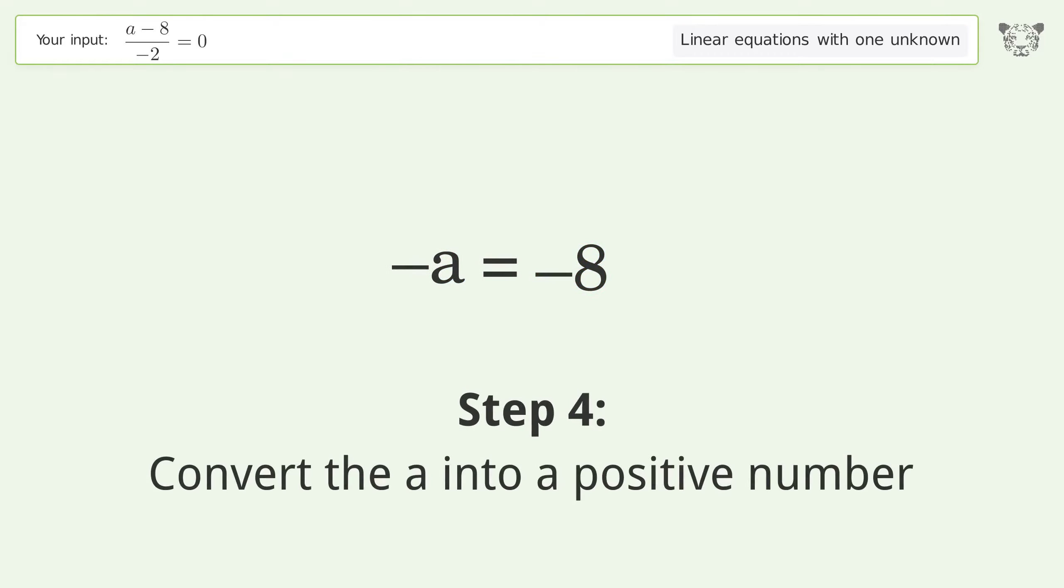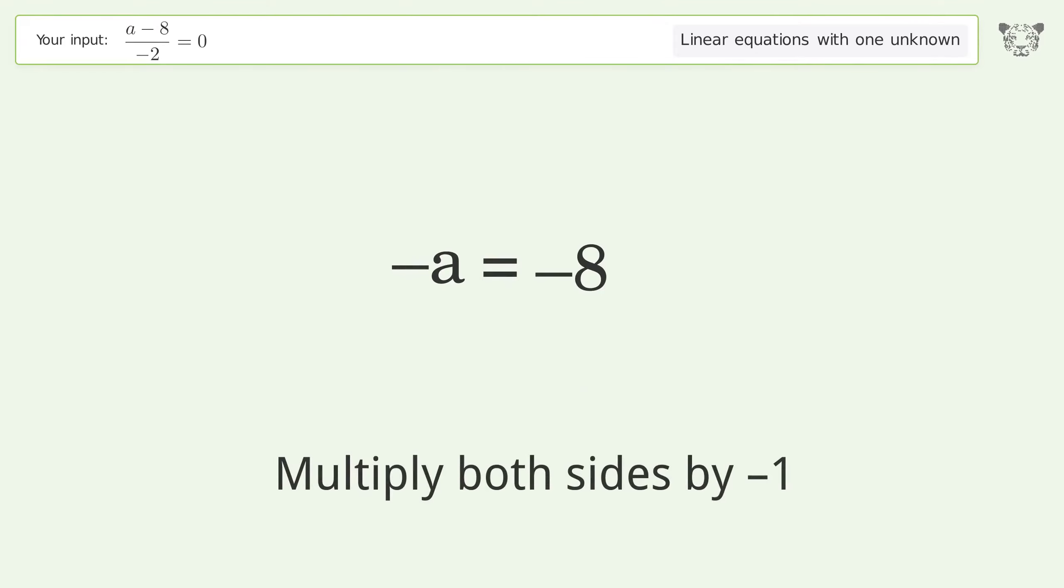Convert the a into a positive number. Multiply both sides by negative 1. Remove the 1s. Simplify the arithmetic. And so the final result is a equals 8.